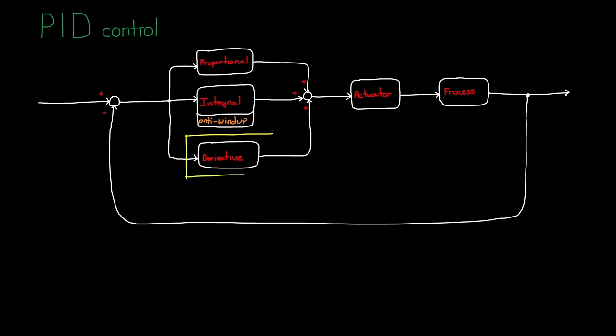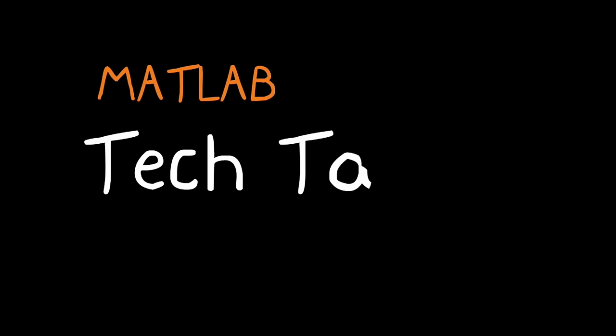In this video we're going to focus our attention on the derivative, and look at how the device that is sensing the true state of the system and producing a measured state that the controller can use can add noise into our feedback loop. I'm Brian, and welcome to a MATLAB Tech Talk.